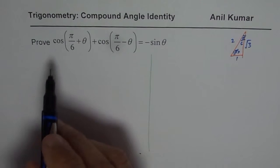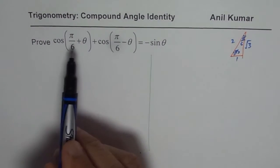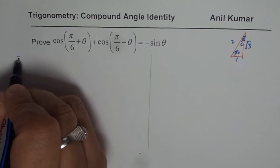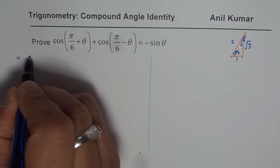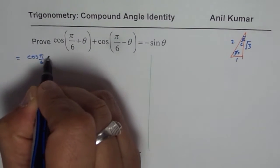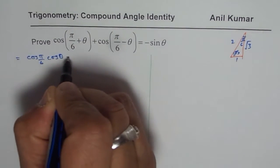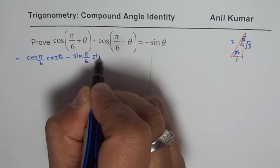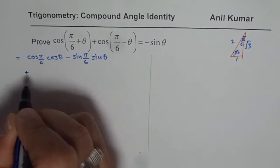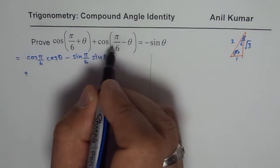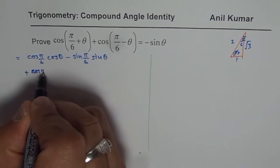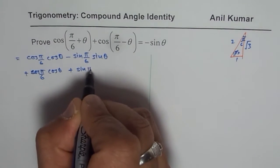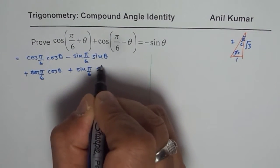One method is to use the compound angle formula and expand these two. Let me expand the left side. We get cos of pi by 6 cos theta minus sine of pi by 6 sine theta, plus cos of pi by 6 cos theta plus sine of pi by 6 sine theta.